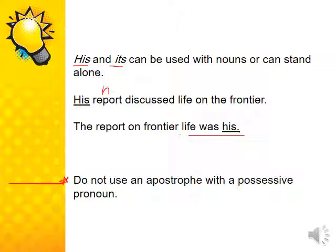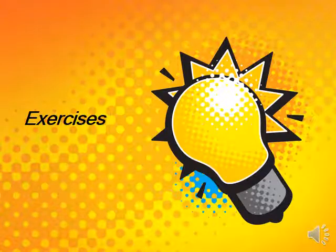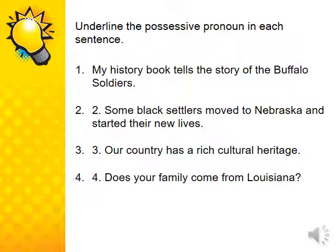An important general rule: do not use an apostrophe with a possessive pronoun. Now let's look at the exercises from your book. Underline the possessive pronoun in each sentence. Number one: 'My history book tells the story of the Buffalo soldiers' — the pronoun is 'my.'